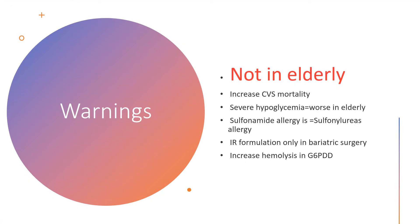Do not give this medication to elderly patients. It may increase cardiovascular mortality, so be careful in anyone with cardiovascular disease. It can lead to severe hypoglycemia, which would be much worse in the elderly. Sulfonamide allergy is equivalent to sulfonylurea allergy, so anyone with a history of hypersensitivity to sulfonamides must not take any sulfonylureas. Only immediate-release formulations should be used in anyone who has undergone bariatric surgery. In patients diagnosed with G6PD deficiency, do not give glyburide, as it will cause increased hemolysis.